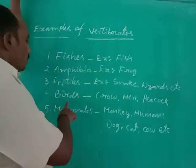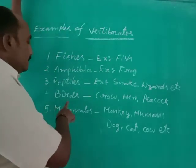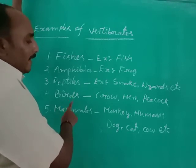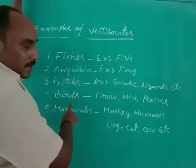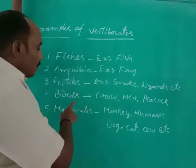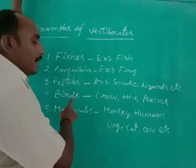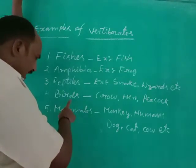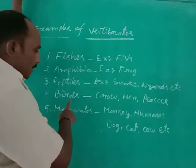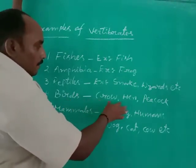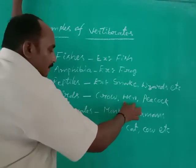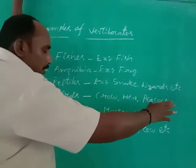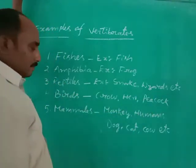The fourth group is birds. Birds lay eggs and the entire body is covered by feathers. The examples of birds are crow, hen, peacock, sparrow, etc.